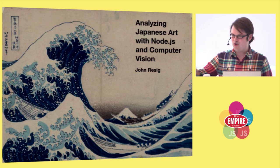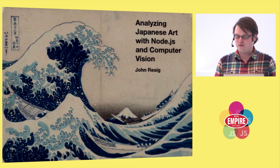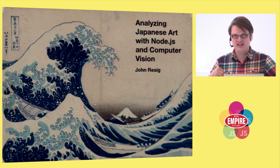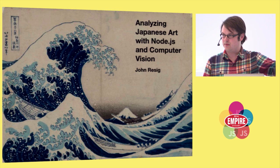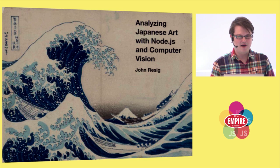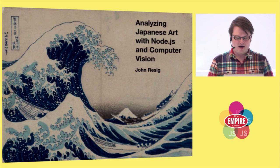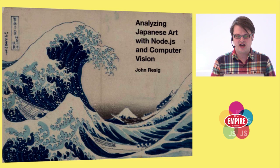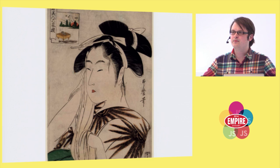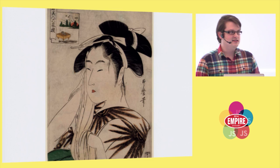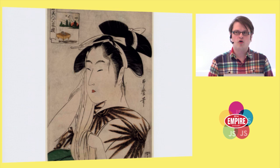I'm going to give a two-second crash course on what Japanese woodblock printing is. It's an art form created in Japan from about the 1600s to the late 1800s. This is probably the most famous woodblock print — Hokusai's The Great Wave — which you've likely seen on mugs, mouse pads, and T-shirts. There are a lot of other woodblock prints created during this time period depicting different people who lived in the city of Edo, which we now know as Tokyo.